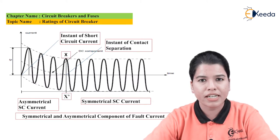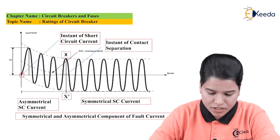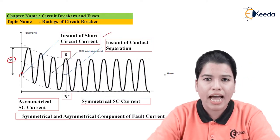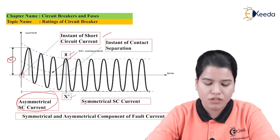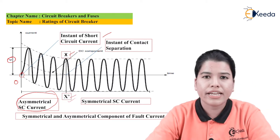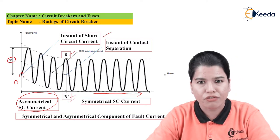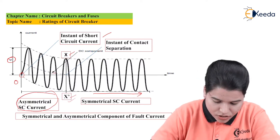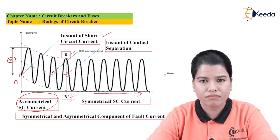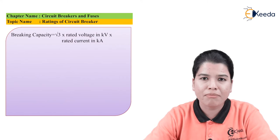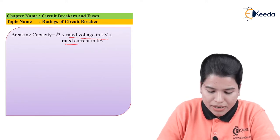On the graph of symmetrical and asymmetrical components of fault current: the point where short circuit current occurs is marked, ip is the peak value of fault current. X to X' represents the period up to which the waveform is asymmetrical; from 0 to X' is the asymmetrical component, and from X' forward it becomes the symmetrical component. The dotted line shows the DC component. The instant at which contacts separate is also marked. The formula for breaking capacity is: Breaking Capacity = √3 × rated voltage (kV) × rated current (kA).